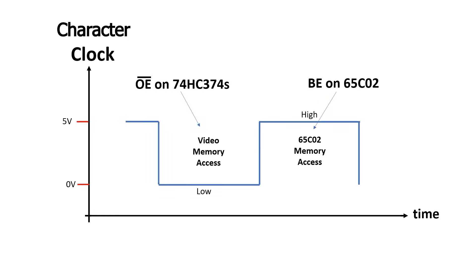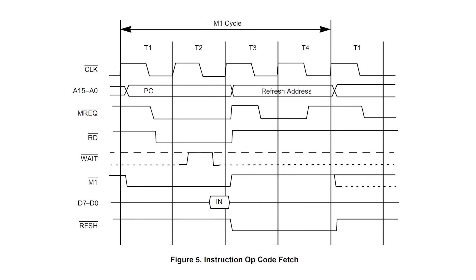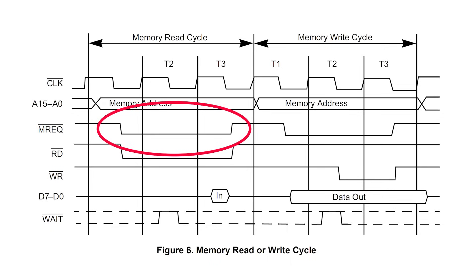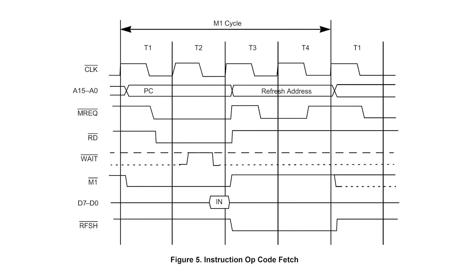If I can, I'd like to do something similar for the Spectrum. That's really easy for the 65C02, but it's not so simple for the Z80. The Z80 memory cycle covers at least one clock for instruction fetch, and one and a half clocks for general reads and writes. The other problem occurs during reads.